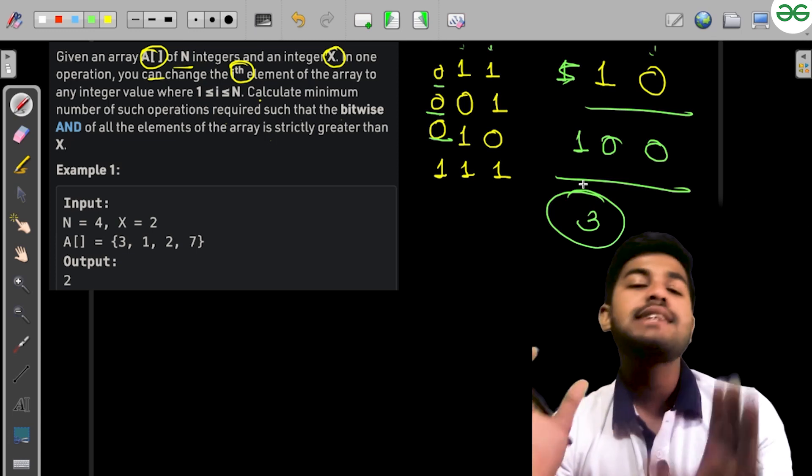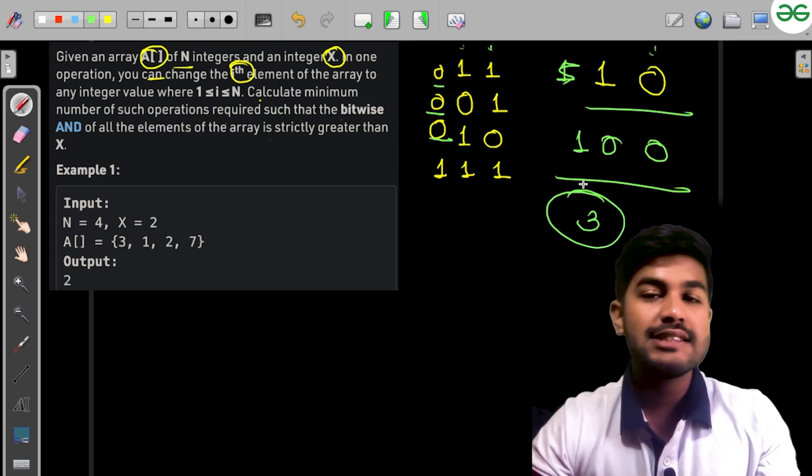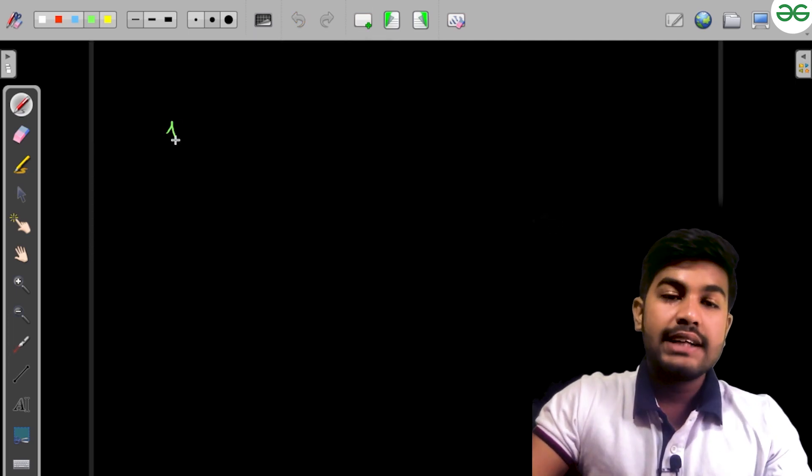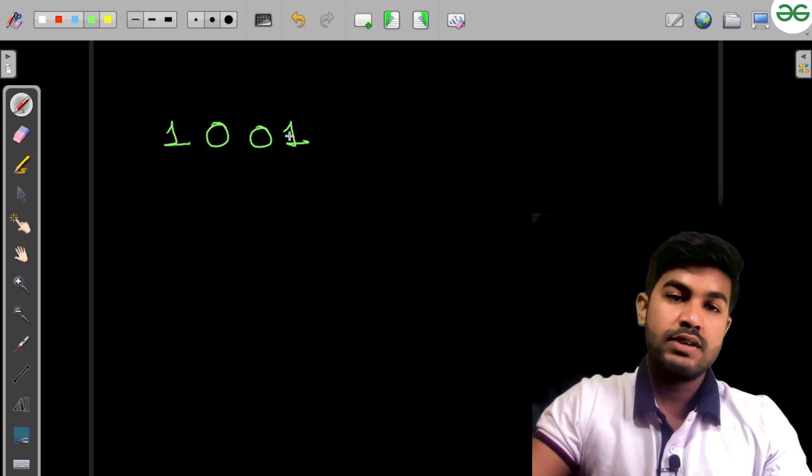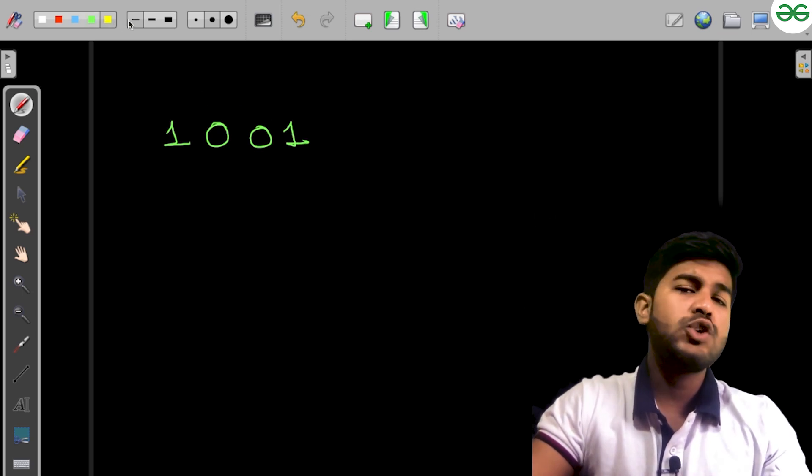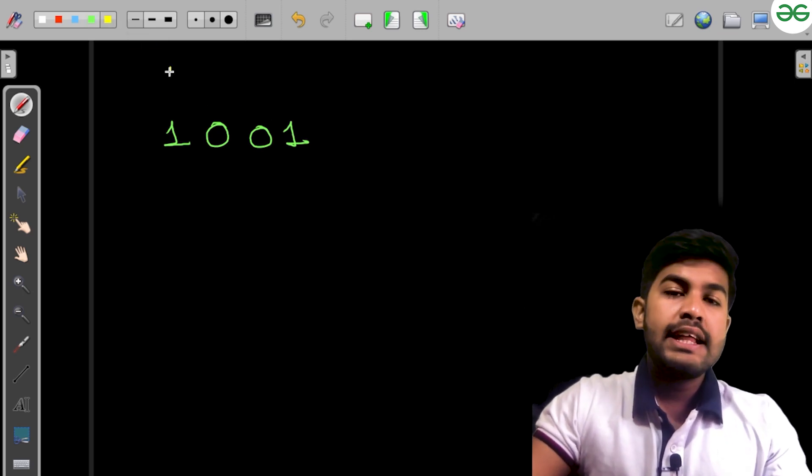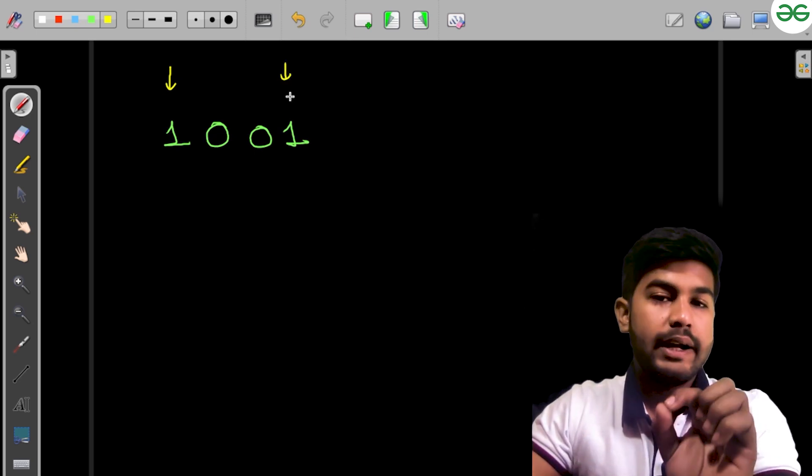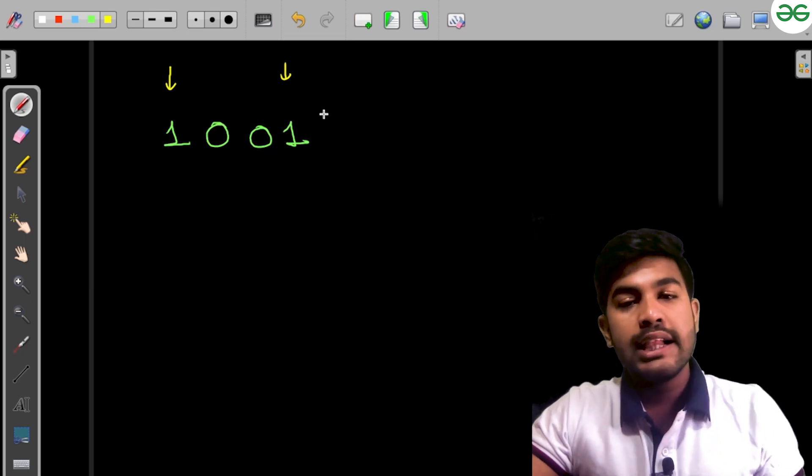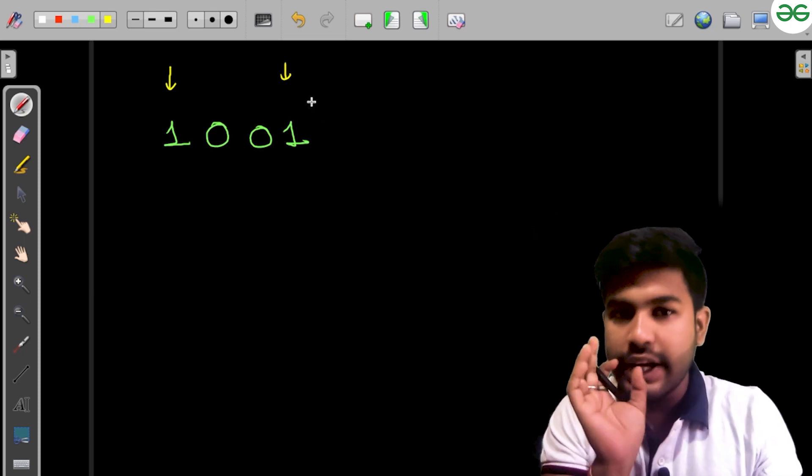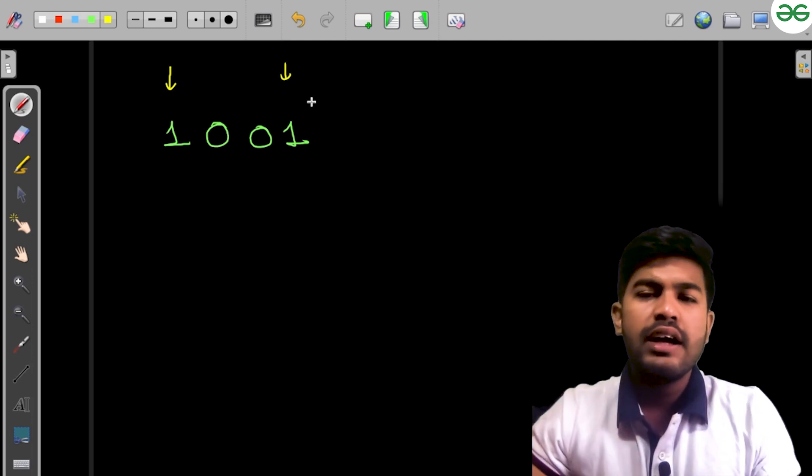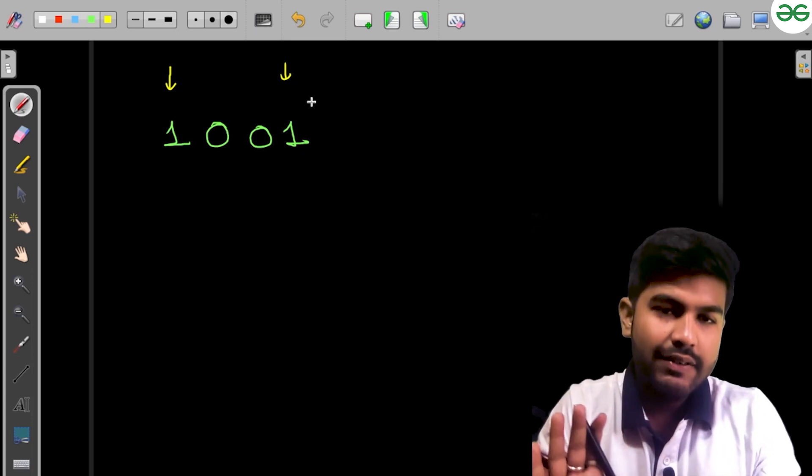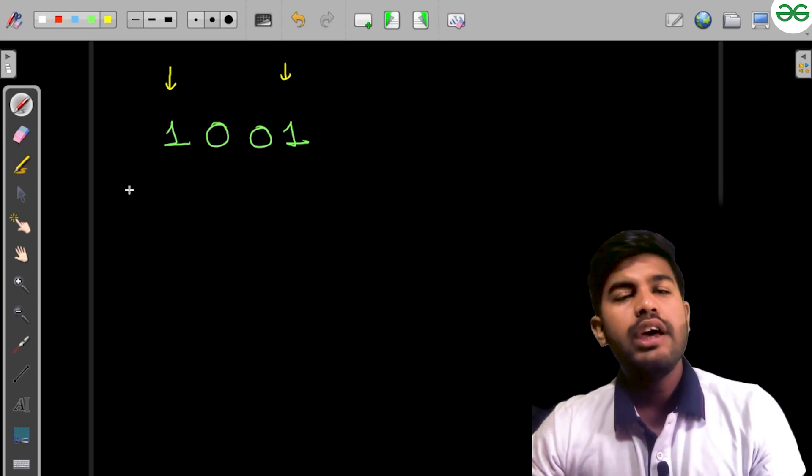Suppose X equals 1001 in binary. There are two scenarios: either you fix all the set bits and then fix one more bit, or you do the same number plus set any other bit. Setting any additional bit would make it just greater than X.